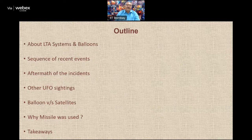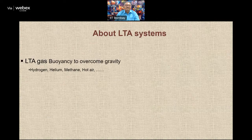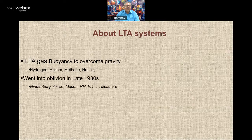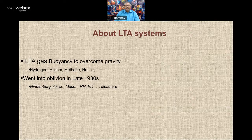You must have heard that ultimately the balloon was shot down using an AIM-9X Sidewinder missile, and many people are wondering why a missile had to be used. LTA systems are the ones that use buoyancy to overcome gravity. There are many LTA gases as you are all aware. After the initial era when airships were ruling the skies, they went into oblivion — hibernating around the late 1930s and early 1940s because of a series of disasters and accidents, prominent among them being the Hindenburg disaster in the US, followed by Akron, Macon, R101, etc.